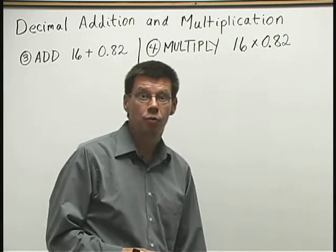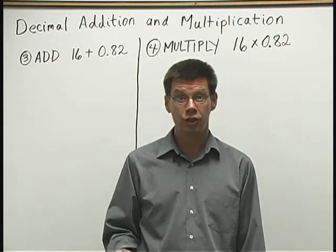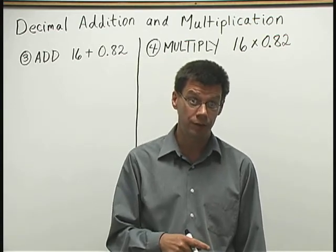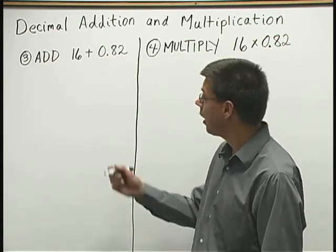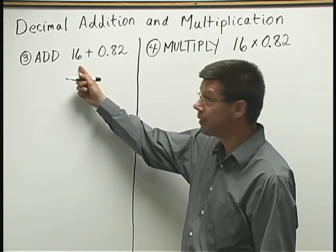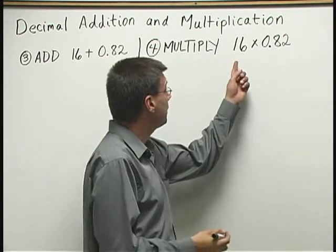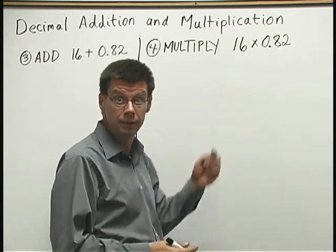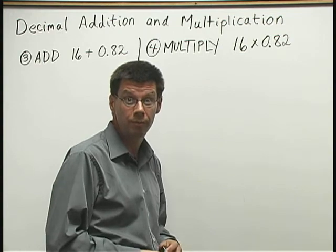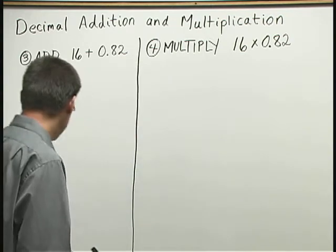Let's look at a couple more problems where we compare addition of decimals to multiplication of decimals. Here, our addition problem is 16 plus 0.82. And our multiplication problem will be to multiply those same two numbers. Let's start with the addition.